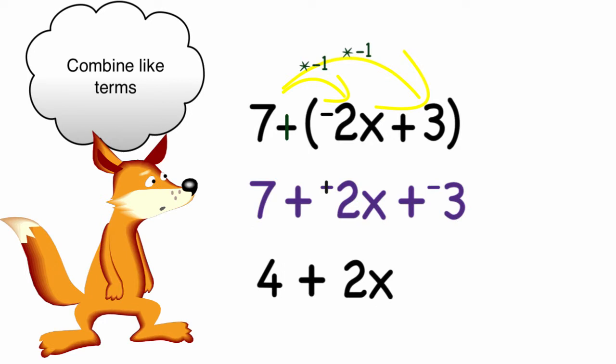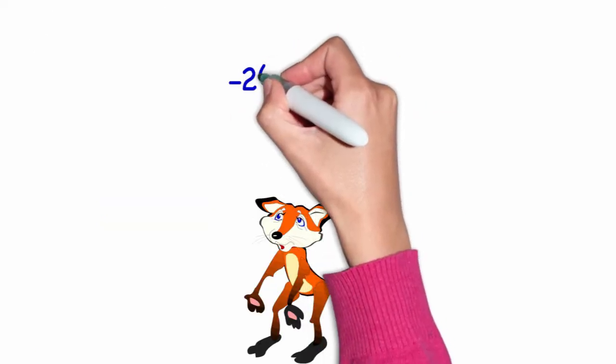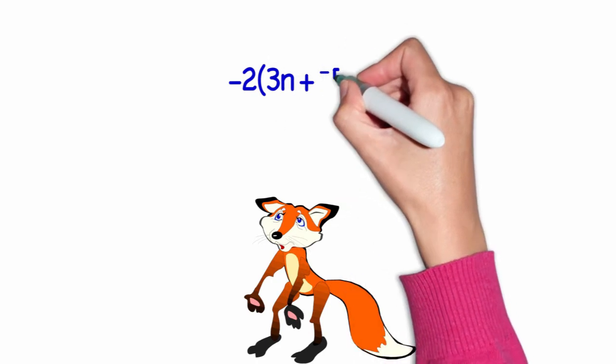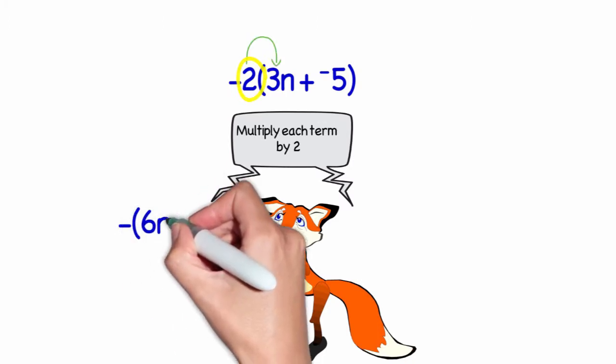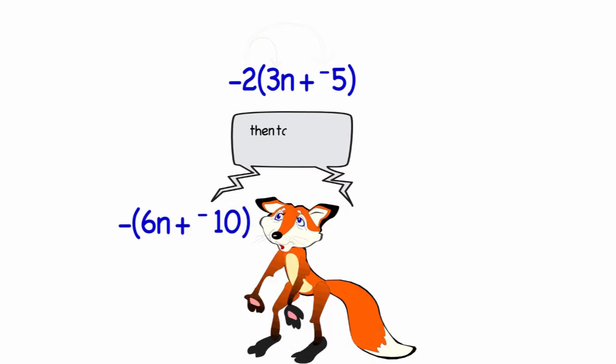So far, so good. Now let's look at negative 2 times quantity 3n plus negative 5. I could look at this in two ways. I could say 2 times everything in the parentheses, and then take the opposite of that.